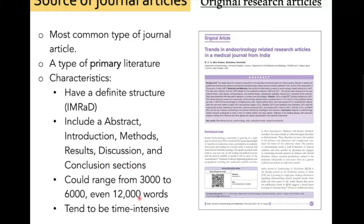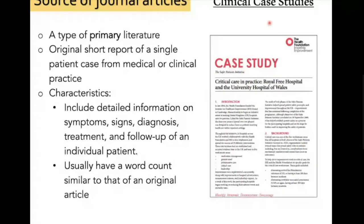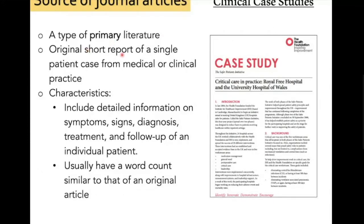An original research article can range up to 12,000 words, and when it comes to experimental work it is time intensive. Another type of primary literature is the clinical case study. It is a short report of a single patient case from medical or clinical practice. It includes detailed information on symptoms, signs, diagnosis, treatment, follow-up, or any intervention processes of an individual patient.